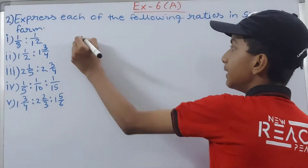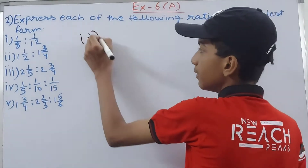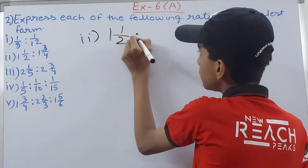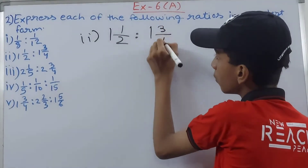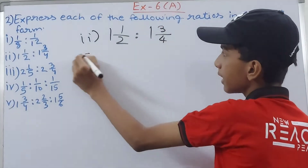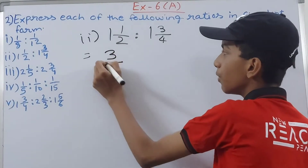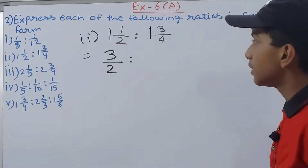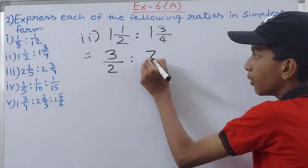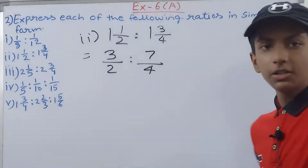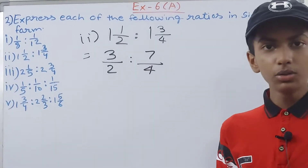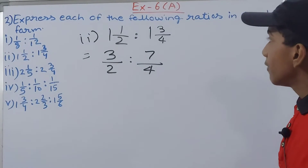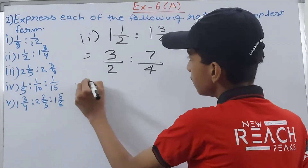Next, the second part: 1 whole 1/2 : 1 whole 3/4. First we convert them into improper fractions. 1 whole 1/2 becomes 3/2, and 1 whole 3/4 becomes 7/4.